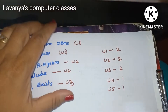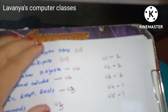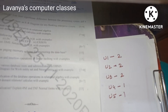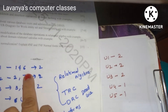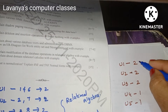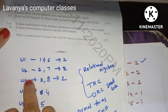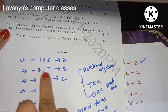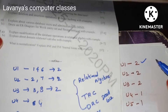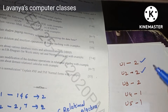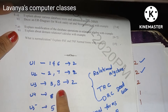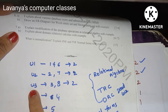Here is the question weight by unit: From unit 1 — questions 1 and 6, so two questions. From unit 2 — questions 2 and 7, two questions. From unit 3 — questions 3 and 8, two questions.